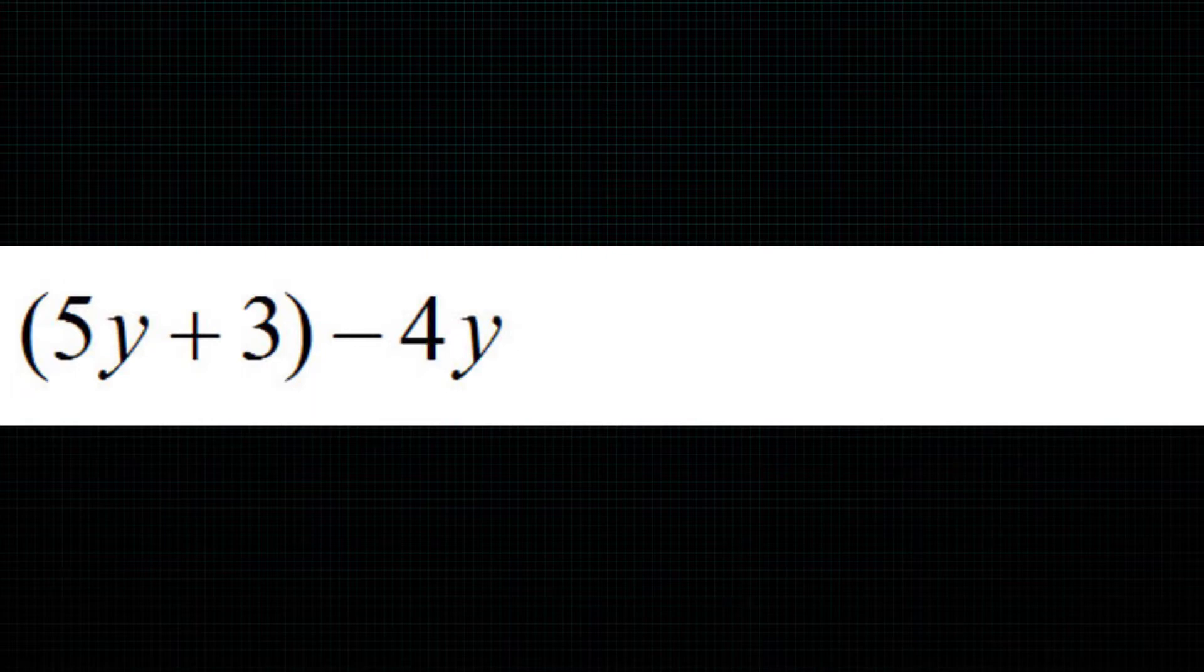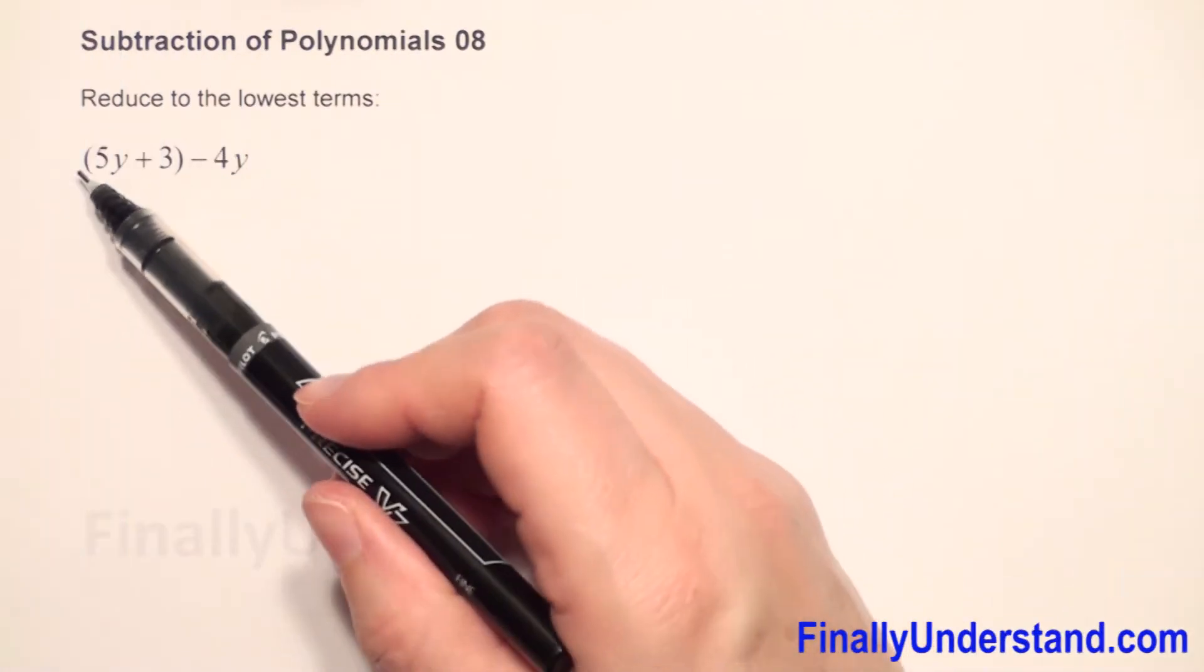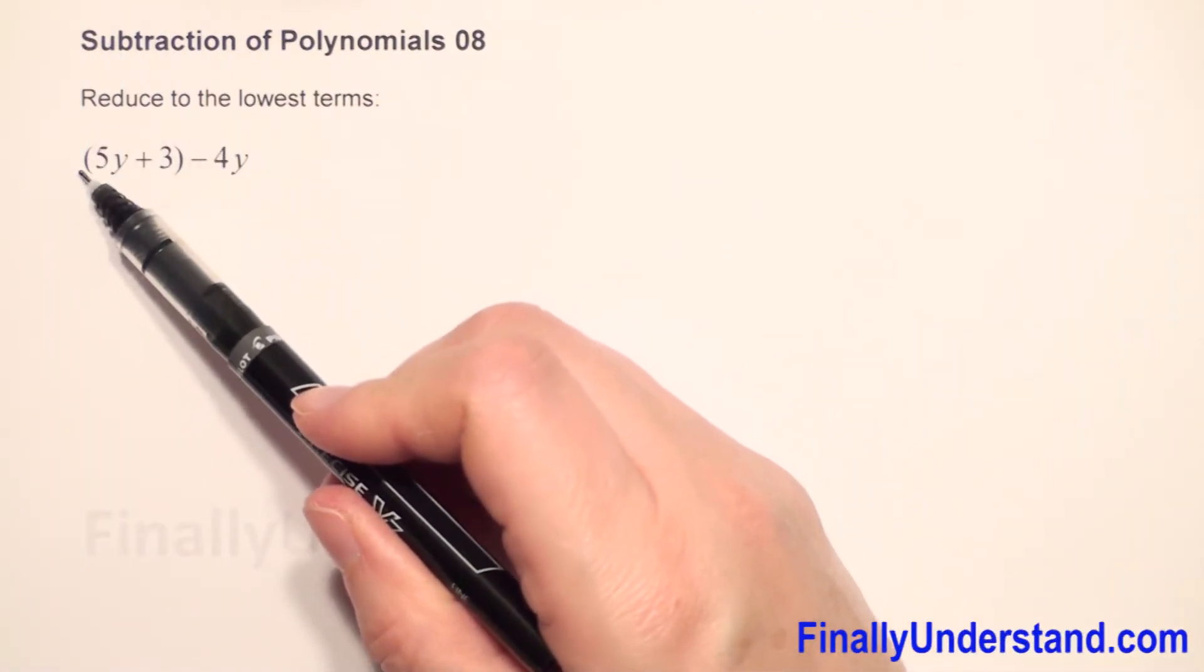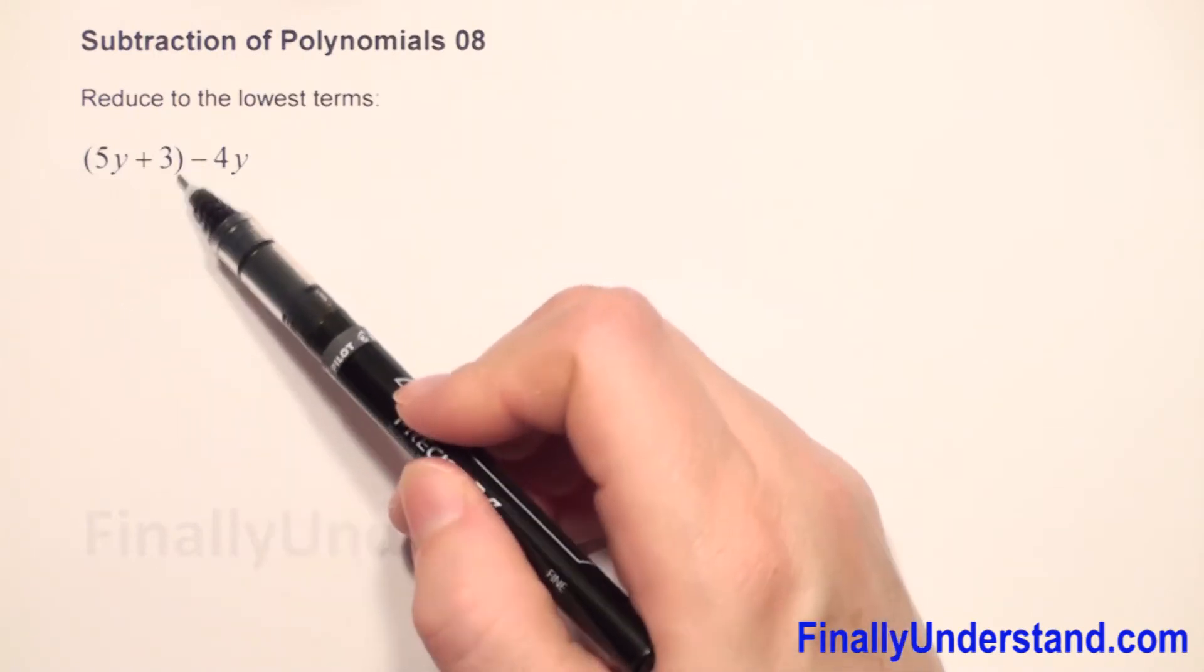We have subtraction of polynomials. First, we have to take down the parenthesis. When we don't have any sign before parenthesis, it means we have a positive sign. So when we have a positive sign before parenthesis, just take down the parenthesis.